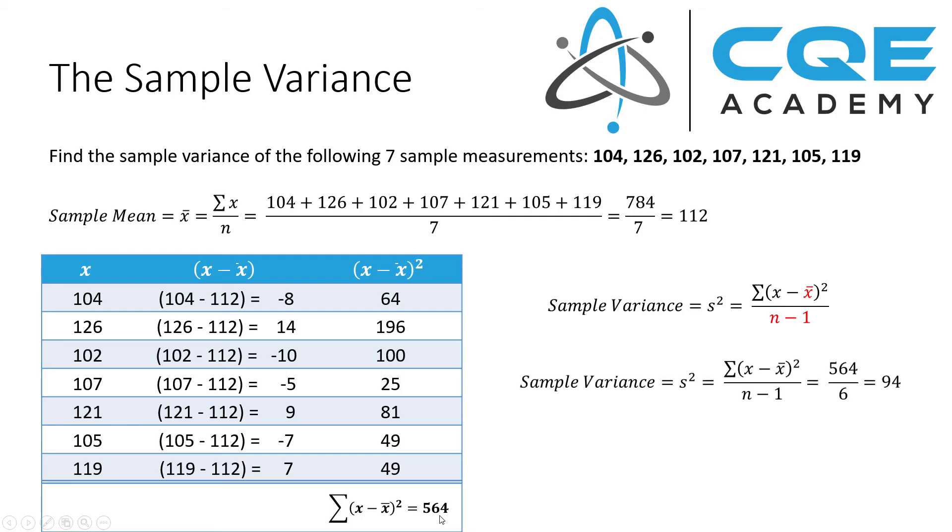Now we can complete our sample variance calculation by saying the sum of x minus x bar squared divided by n minus 1 equals 564 divided by 7 minus 1, which is 6, equals 94. So our sample variance in this example is equal to 94.